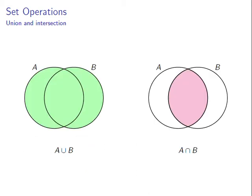The union and intersection of two sets are shown in these Venn diagrams as shaded regions. On the left we have the union of A and B, and on the right we have the intersection of A and B.